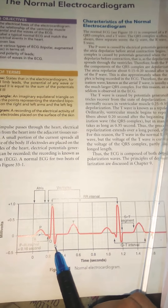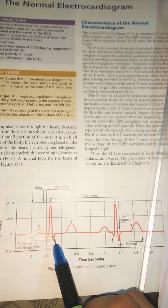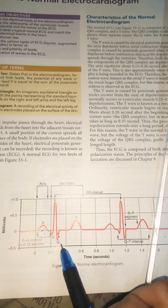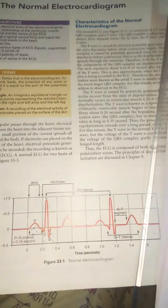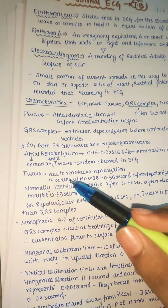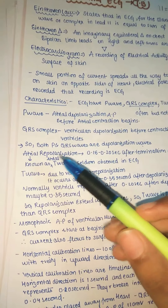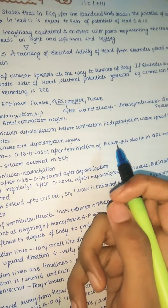The QRS complex is mainly due to ventricular depolarization. Just as the P wave precedes atrial contraction, this depolarization wave spreads through the ventricles before ventricular contraction. Both the P wave and QRS wave are depolarization waves — P wave represents atrial depolarization and QRS represents ventricular depolarization. That is a key point to remember.